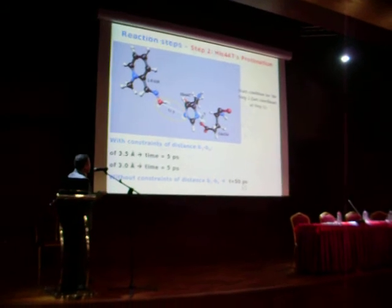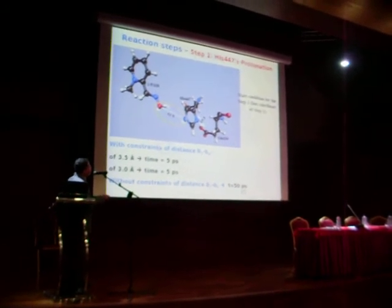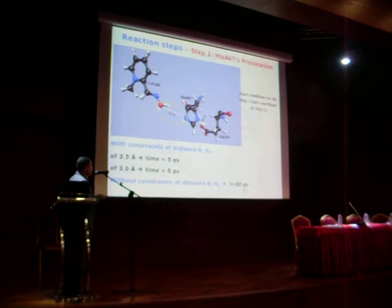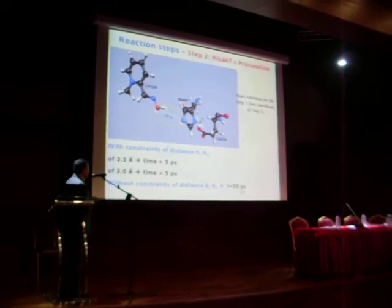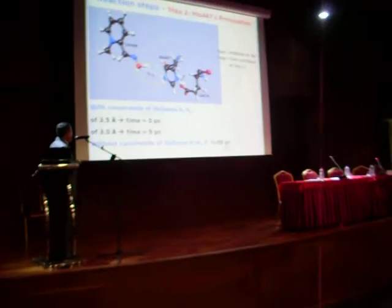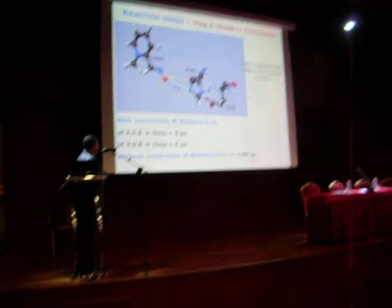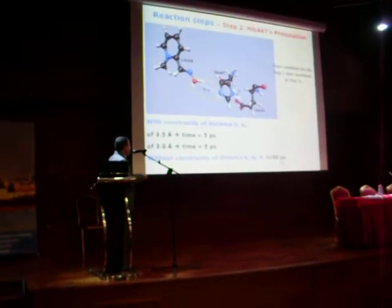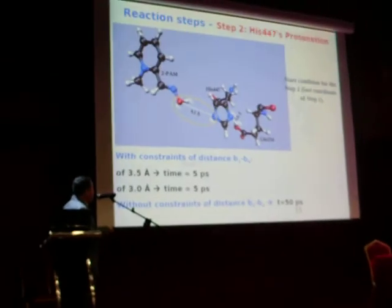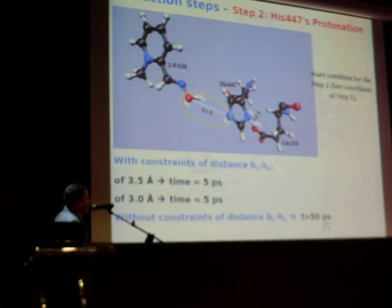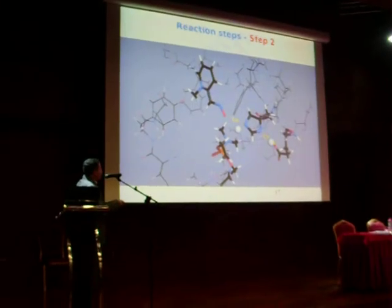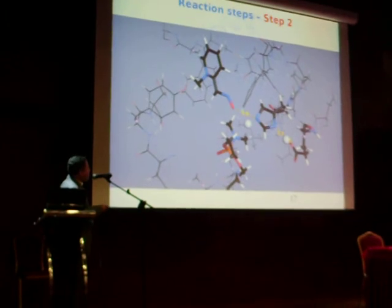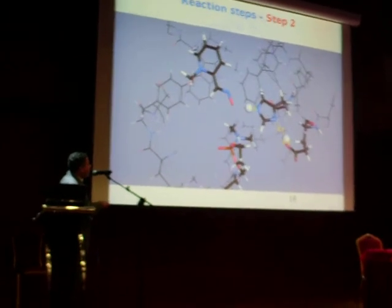The second step starts from the last coordinates of step 1. We carried out simulations with constraints of distances B1 and B4 of 3.5 angstroms for 5 picoseconds, followed by a restriction of 3.0 angstroms for 5 picoseconds. In the last 50 picoseconds, the constraints were released, and we can see that at constraints of 3.0 angstroms, the proton of pralidoxime was transferred to histidine-447.